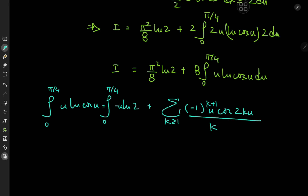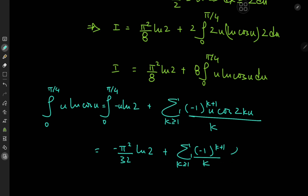The first integral on the right-hand side is pretty standard — it yields −π²/32·log 2. Since the integral on the left-hand side converges, for the integral of the sum on the right-hand side we can switch the integration and summation operators and write this as the sum over positive integers k of [(-1)^(k+1)/k] times the integral from 0 to π/4 of u·cos(2ku) du, taking the k-dependent factor outside the integration.